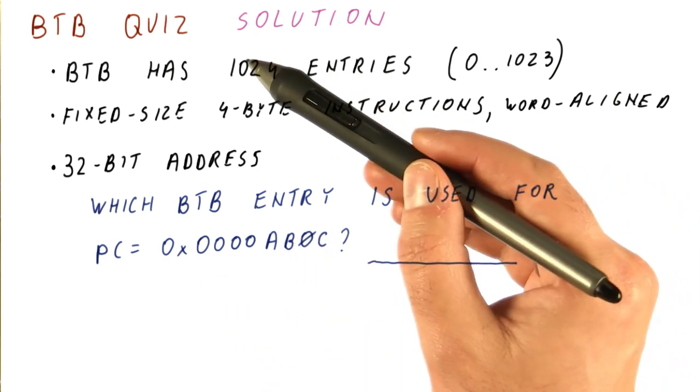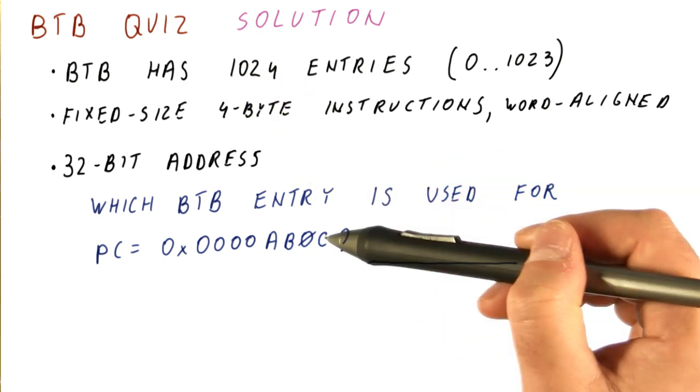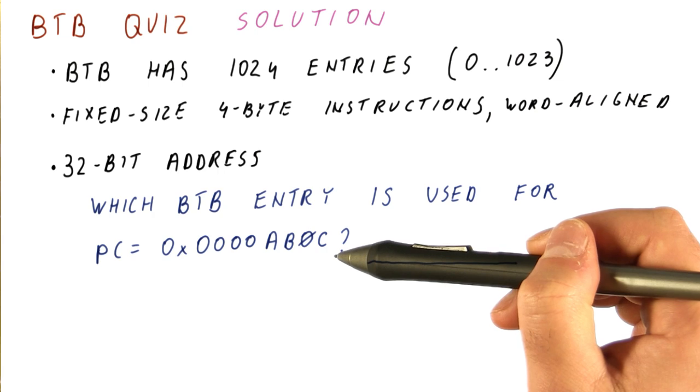It might seem easy because we need 10 bits to index into this BTB, so we will just take the least significant 10 bits of this PC and index into the BTB with that.